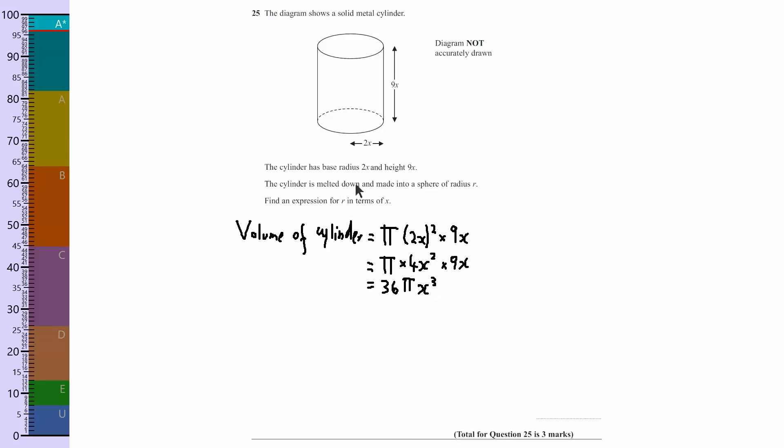Now, it's saying it's melted down, so the volume of the cylinder would be the same as the volume of the sphere. So the formula for a sphere is 4 thirds pi r cubed, and we're saying that that's equal to 36 pi x cubed.